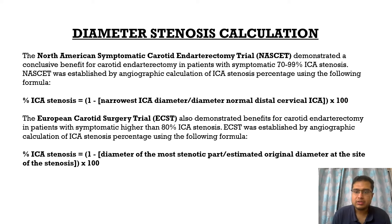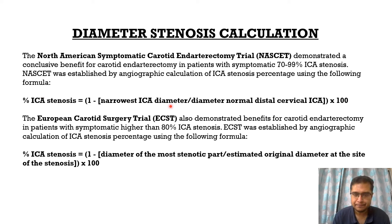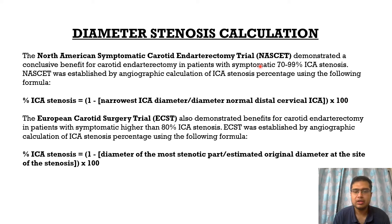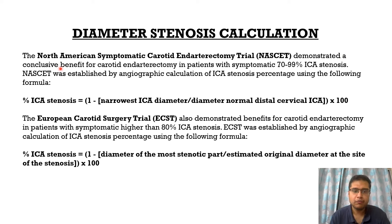To calculate diameter stenosis, the NASCET (North American Symptomatic Carotid Endarterectomy Trial) formula is: percentage ICA stenosis = (1 minus the narrowest ICA diameter divided by the diameter of the normal distal cervical ICA) multiplied by 100. The NASCET trial demonstrates a conclusive benefit for carotid endarterectomy in patients with symptomatic 70–99% ICA stenosis.